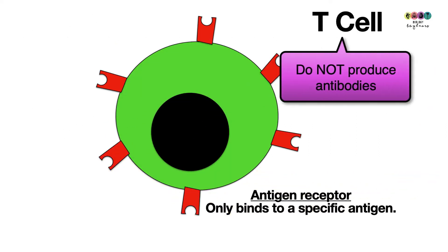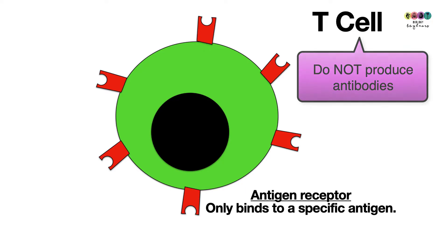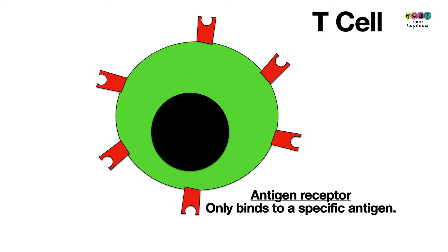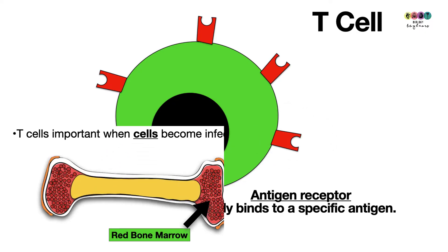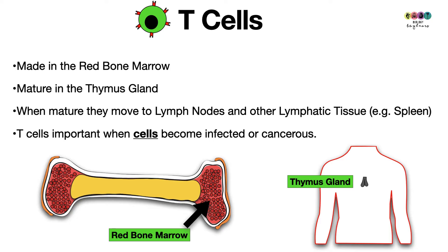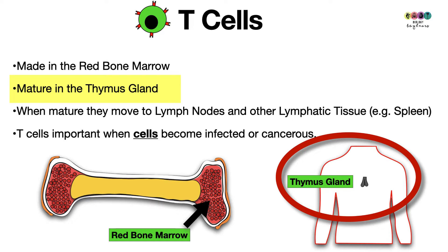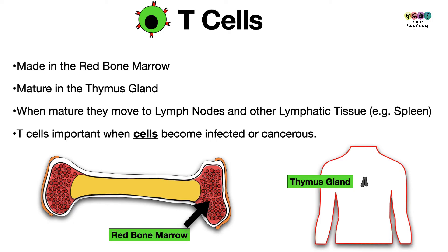T cells do not produce antibodies — that's really important, nothing to do with antibodies. But T cells, very like B cells, have antigen receptors on their surface that are specific to one type of antigen. T cells are made in the red bone marrow just like B cells, but they mature in the thymus gland in your chest — T for thymus, T for T cells. When mature they move to the lymph nodes and other lymphatic tissues like the spleen.